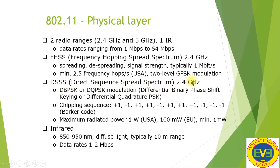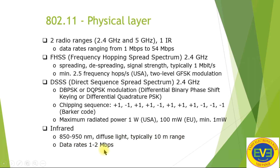DSSS (Direct Sequence Spread Spectrum) uses the 2.4 GHz band with DBPSK and DQPSK modulation — Differential Binary Phase Shift Keying and Differential Quadrature PSK. Barker codes are used as chipping sequences. Maximum radiated power is 1 watt in the USA, 100 milliwatts, and minimum 1 milliwatt in Europe. Infrared uses 850–950 nanometre wavelength, with diffuse light in a typical 10-metre range and data rates of 1–2 Mbps.